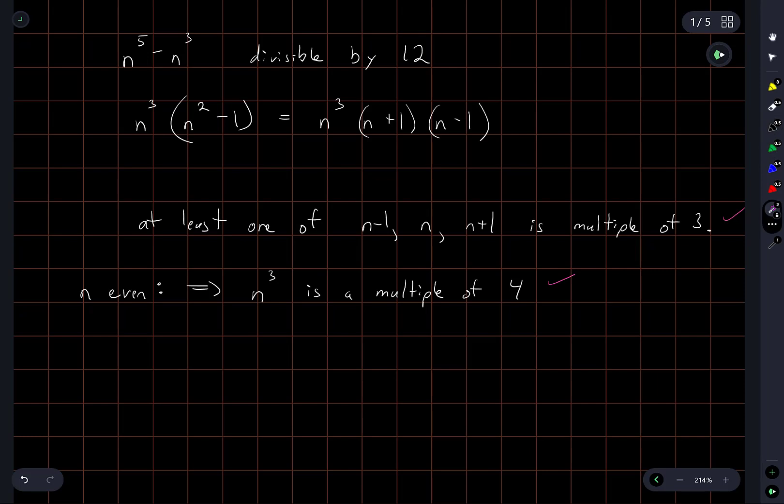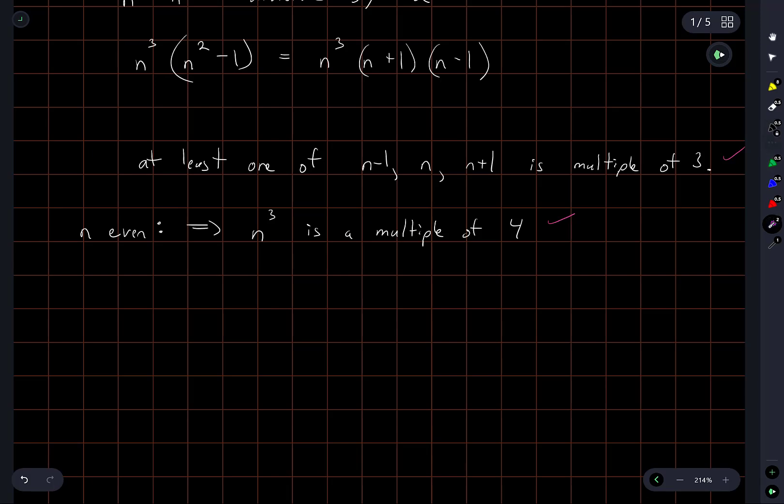That's pretty easy to see, right, because if n is even then n has a factor of 2 in it. And in fact we can say something better than this: n cubed will in fact be a multiple of 8, not just a multiple of 4, but that's overkill.